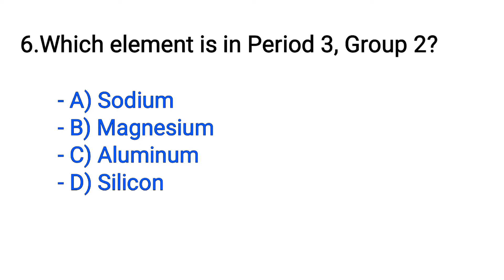Question number 6. Which element is in period 3, group 2? Option A: Sodium. B: Magnesium. C: Aluminium. D: Silicon. The correct answer is option B, Magnesium.